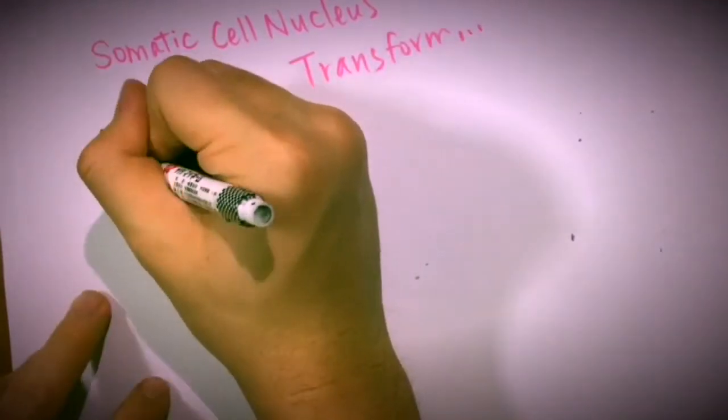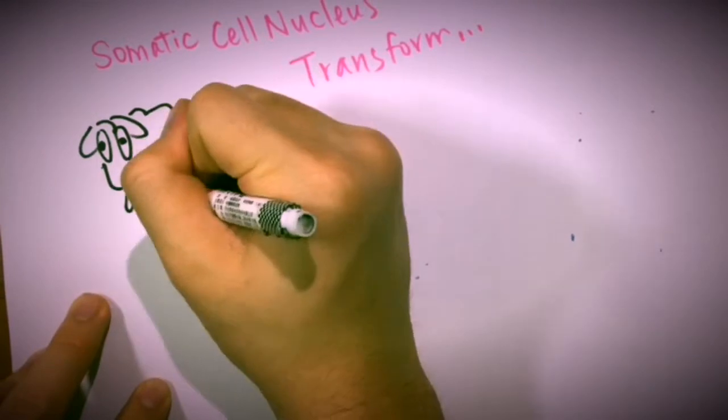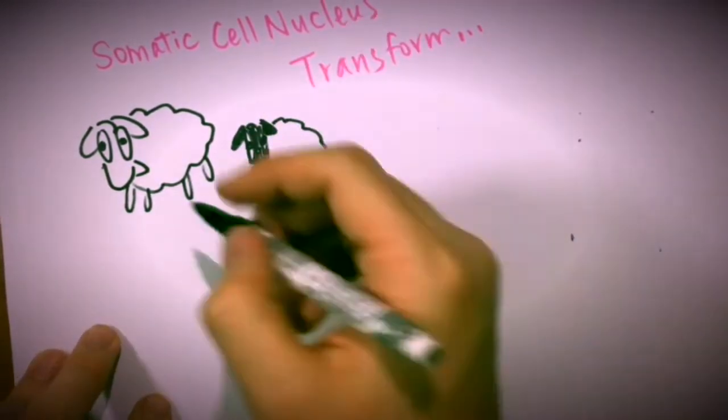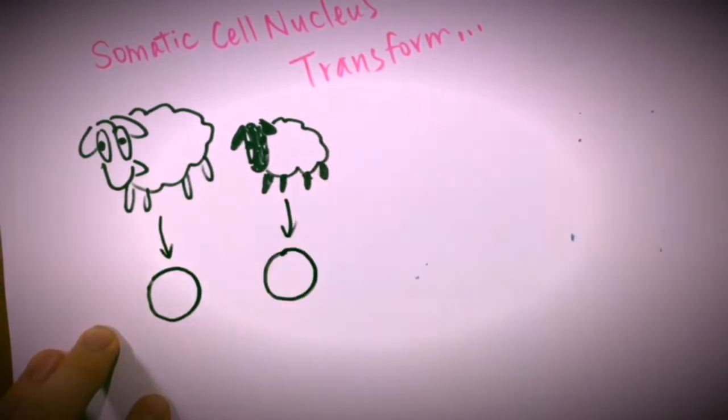This is how somatic cell nucleus transform works. Here is a white faced sheep, or what we want, and a black faced sheep, or surrogate mother.